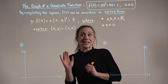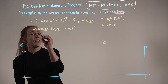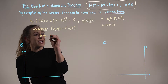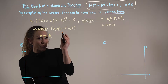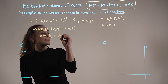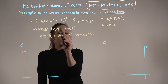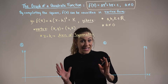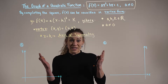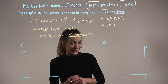One note regarding the x-component of our vertex: x = h is called the axis of symmetry. We call this vertical line the axis of symmetry because our graph, or parabola, is going to be a perfect reflection across this vertical line.